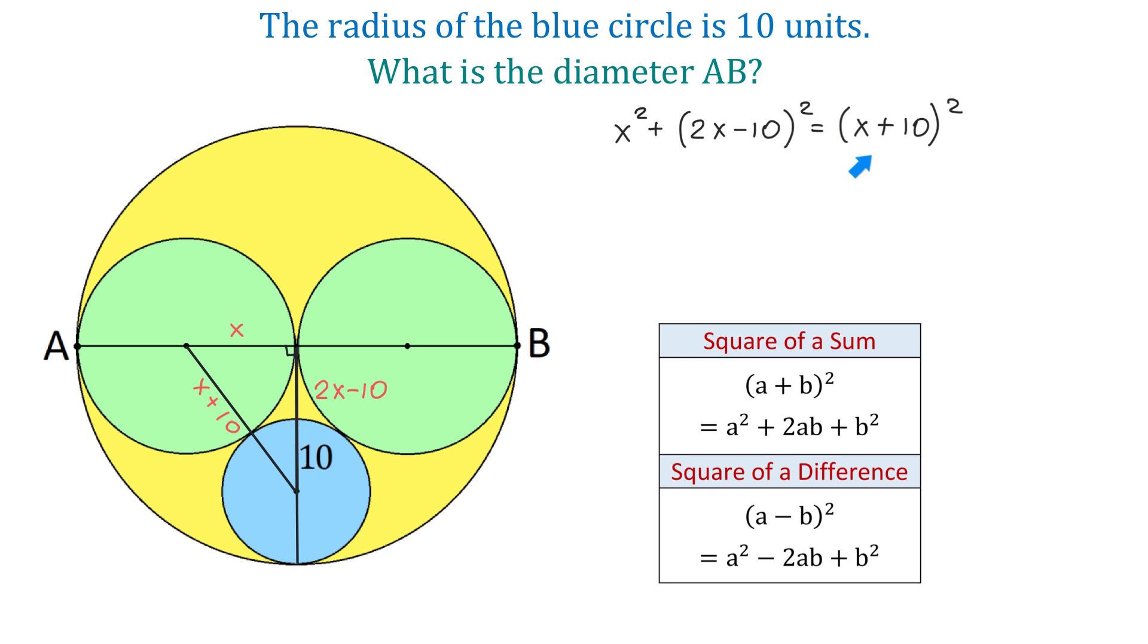Now, to remove these parentheses, we will use the formulas for the square of a sum and a square of a difference. So here we have the square of a difference, and the formula is A minus B squared equals A squared minus 2AB plus B squared.